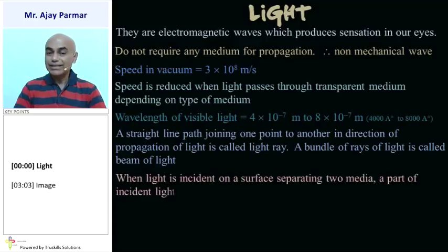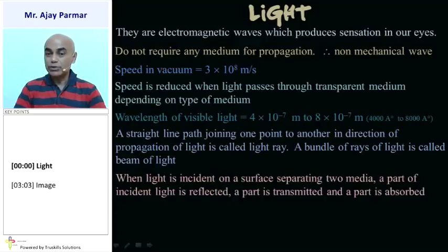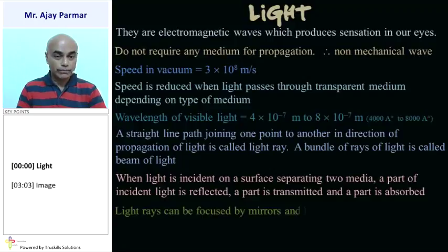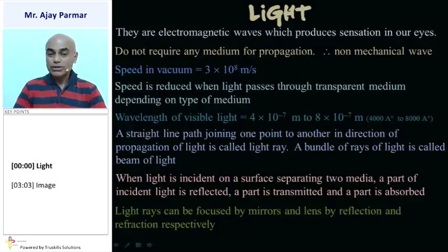In fact, when light is incident on any surface which is separating two different media, a part of that light incident will be reflected, whereas a part of that light would be transmitted, or else it can be absorbed also. Light rays are focused by mirrors and lenses by reflection and refraction respectively.